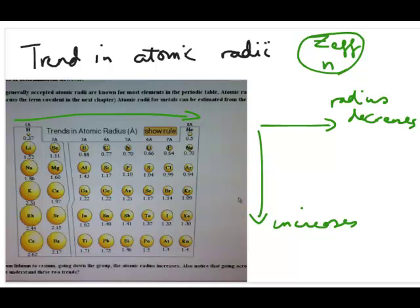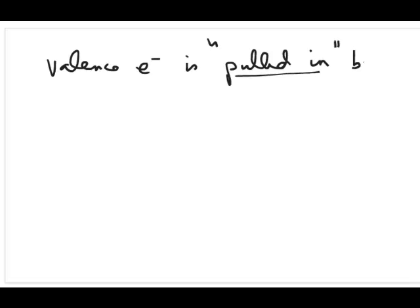As a result, the size will shrink because you're getting pulled in. The valence electron is pulled in as you go across the period. The valence electron is attracted more strongly by the nucleus. And that's why you see a shrinkage in the size of the atom.